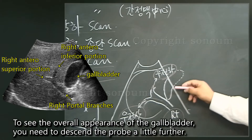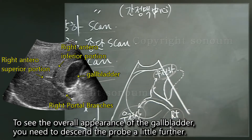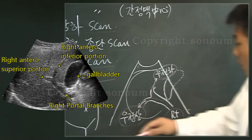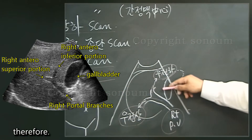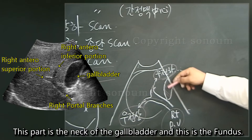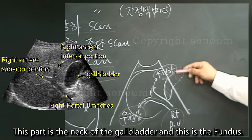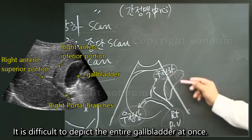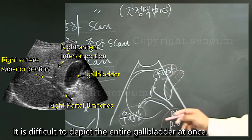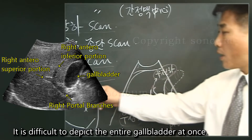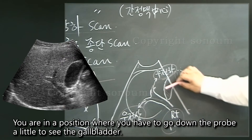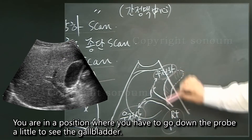To see the overall appearance of the gallbladder, you need to descend the probe a little further. This part is the neck of the gallbladder and this is the fundus. It is difficult to depict the entire gallbladder at once — you have to lower the probe a little to see the full gallbladder.